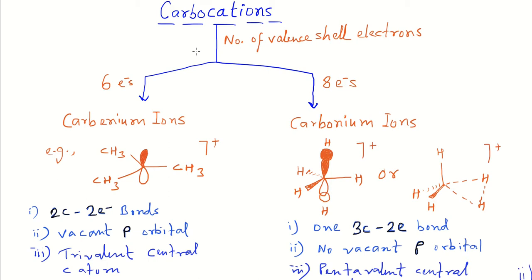There are basically two types of carbocations based on the number of valence shell electrons in the central carbon atom. The first type is carbenium ions, where the central carbon atom possesses only 6 electrons, so the octet configuration is not fulfilled — it is in the sextet configuration.